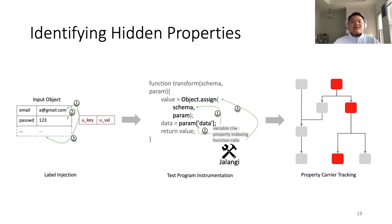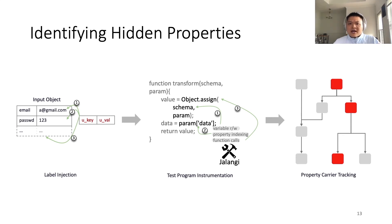The very first thing LYNX will do is dynamic data flow tracking. LYNX will generate a label object, which is a unique key-value pair, and inject the label into the input data of the program. To observe program execution, we leverage a JavaScript analysis framework called Jalangi to instrument our test program. We then execute the test program and start hidden property detection. During execution, LYNX examines every object within the data flow. If an object carries our injected property label, we apply syntactic analysis to discover all potential hidden properties.